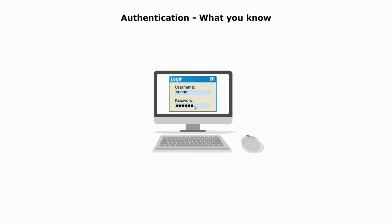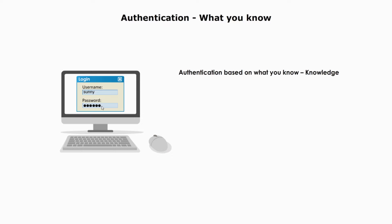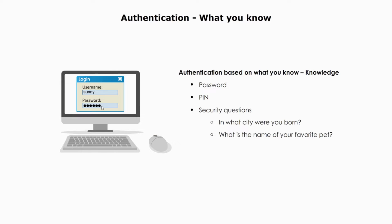What you know. The first and most common factor of authentication is based on what you know — knowledge — such as your password, PIN, and secure questions like: in what city were you born, what is the name of your favorite pet, what was your favorite food as a child, etc.